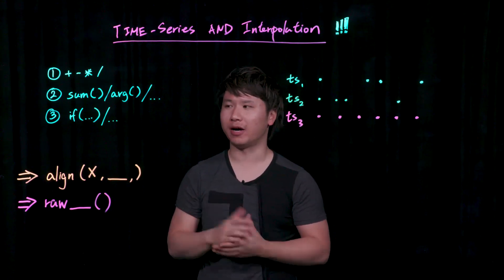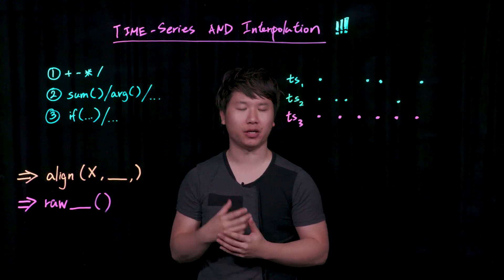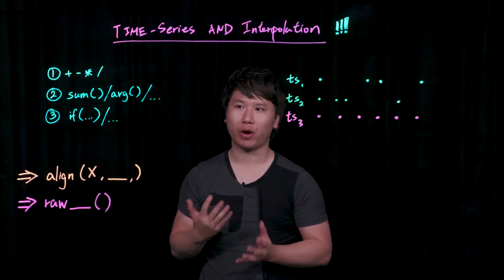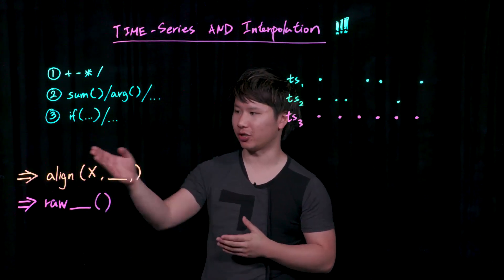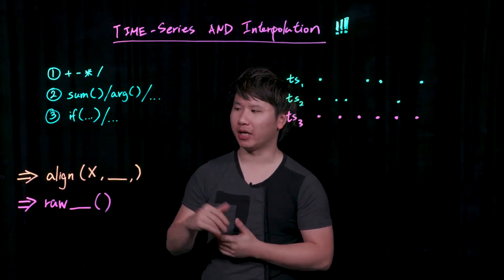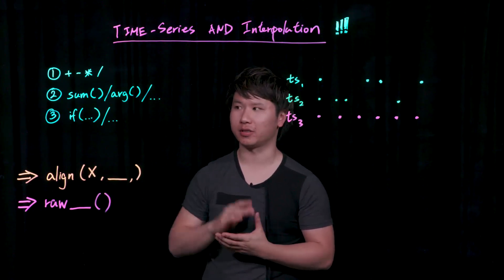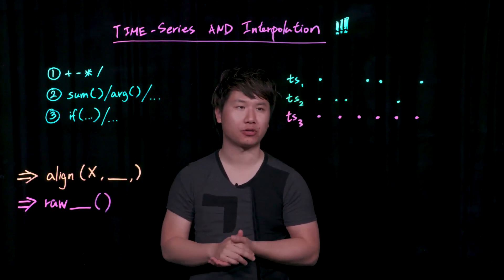So as a rule of thumb, any time you're operating on two or more time series, Wavefront is doing internal interpolation on the data. Now, you can actually control that interpolation, and in a second I will tell you more about our align operation as well as our raw aggregation features.